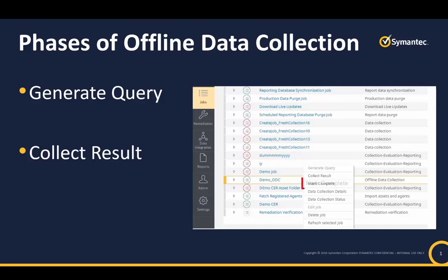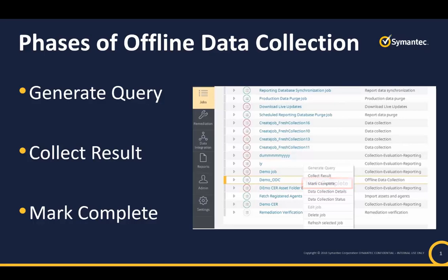The third phase is Mark Complete. After the results are collected for all the agents scoped in the ODC job, you can mark the job as complete. This ends the complete cycle of offline data collection. Note that after marking the ODC job as complete, if you run the offline data collection job again it starts running a fresh cycle in the generate query mode.